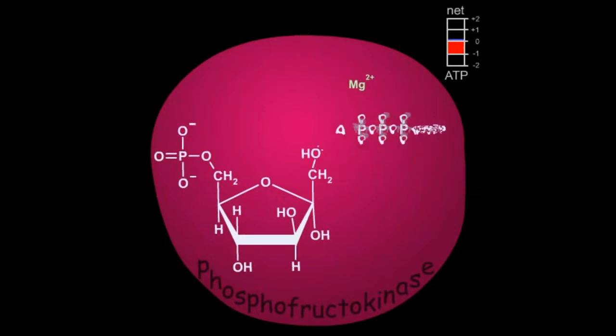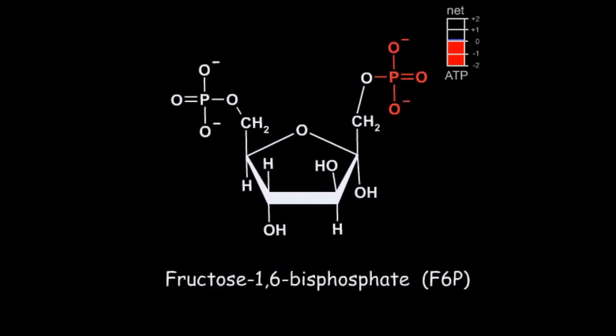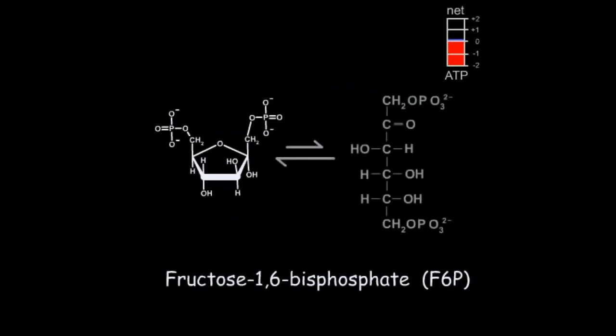In the third reaction of glycolysis, a phosphoryl group is transferred from ATP to fructose-6-phosphate by the enzyme phosphofructokinase. This brings the net investment of the pathway to two ATPs. The product of the reaction is fructose-1,6-bisphosphate. Phosphofructokinase catalyzes the rate-limiting step of the glycolytic pathway. These two phosphorylation reactions are the rate-limiting steps.